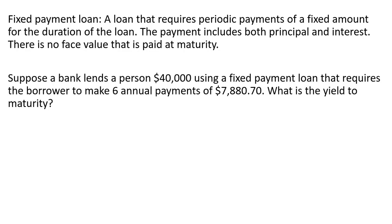Suppose a bank lends a person $40,000 using a fixed payment loan that requires a borrower to make six annual payments of $7,880.70. What is the yield to maturity?